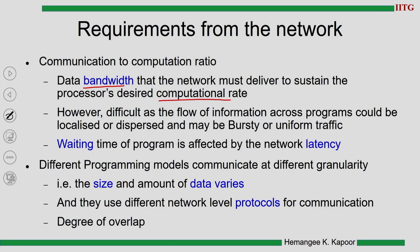The bandwidth requirement is not straightforward because even if the network provides good bandwidth, the communication pattern of the process is not deterministic. Sometimes programs do a lot of information exchange; sometimes it is local to the node or neighboring nodes, and at times it is dispersed to a far-off node. Sometimes it is bursty — very quickly a lot of communication happens — and sometimes we have uniform traffic. So the requirements from a program are not deterministic and can vary as execution proceeds or depending on the type of program.